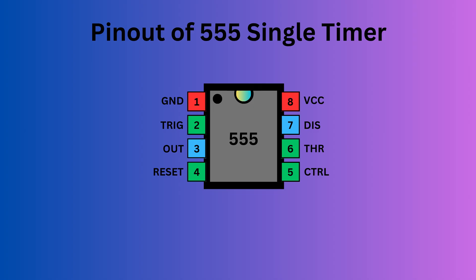The 555 timer IC comes with eight pins. There is a notch or a dot on the chip's body. Pin 1, located at the top left, serves as the ground or ground supply.